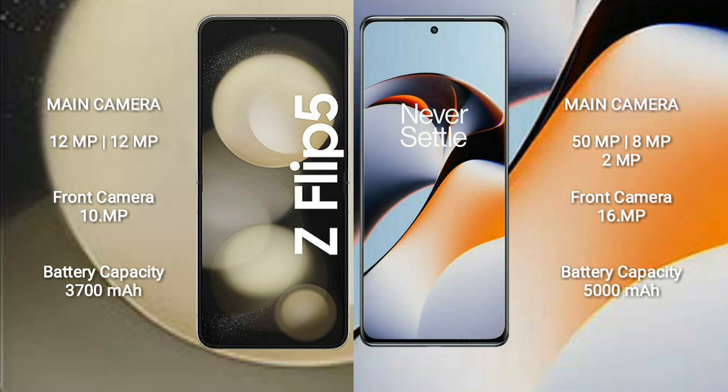Samsung Galaxy Z Flip 5 features a dual rear camera setup with 12MP and 12MP lenses, and a 10MP front camera. OnePlus 11R features a triple rear camera setup with 50MP, 8MP, and 2MP lenses, and a 16MP front camera.